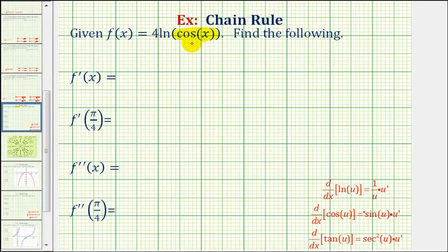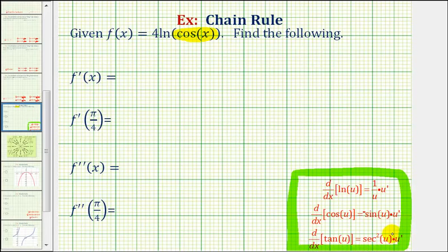The derivative formulas shown here in red include the chain rule, where u is equal to the inner function. The derivatives are a product where the first factor is the derivative of the outer function, and the second factor, u prime, is the derivative of the inner function.